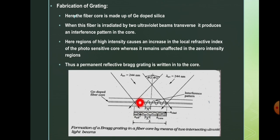There is a term n-effective, which is the sum of the refractive indices of the core regions — where some regions have higher refractive index. The period is also shown here. In between the round-shaped interference patterns, the refractive index will be lower than within those high-index circles. By this process, a permanent reflective Bragg grating is written into the core.